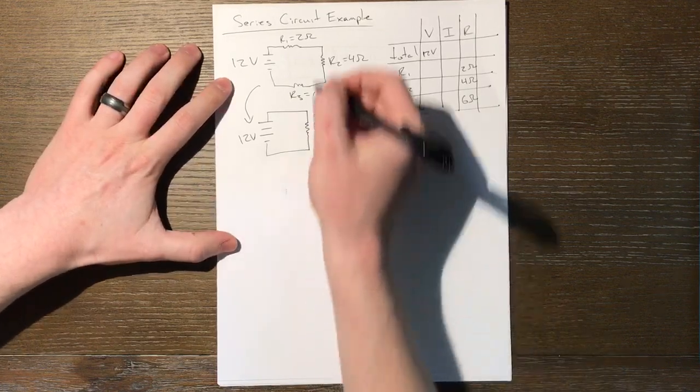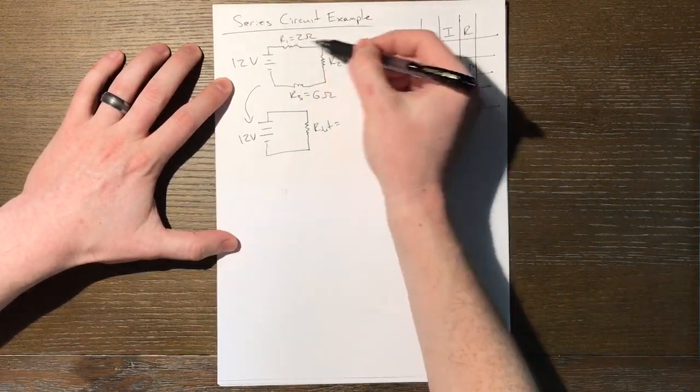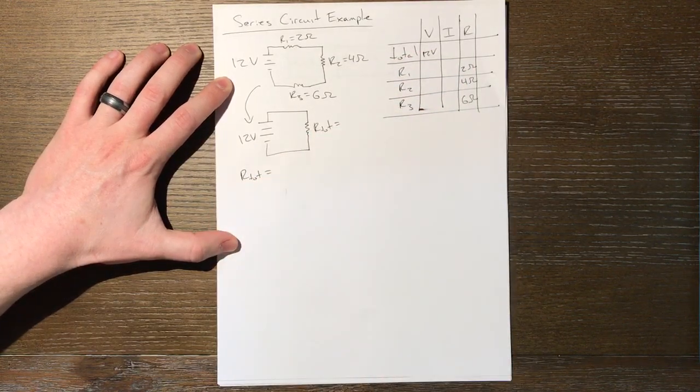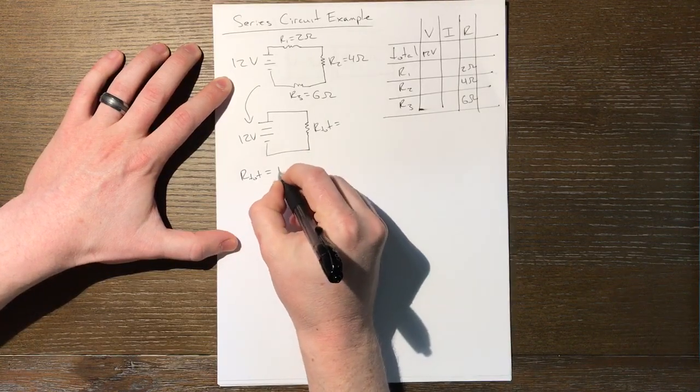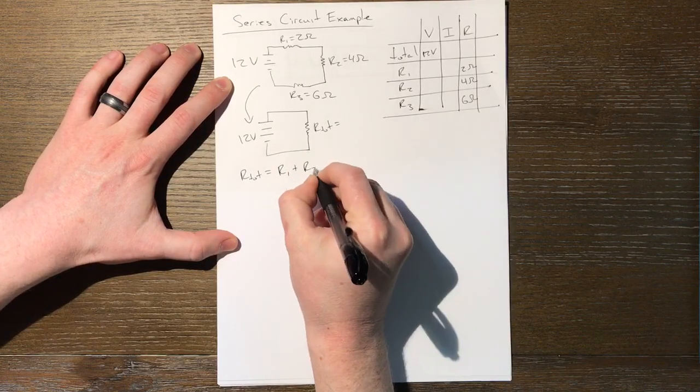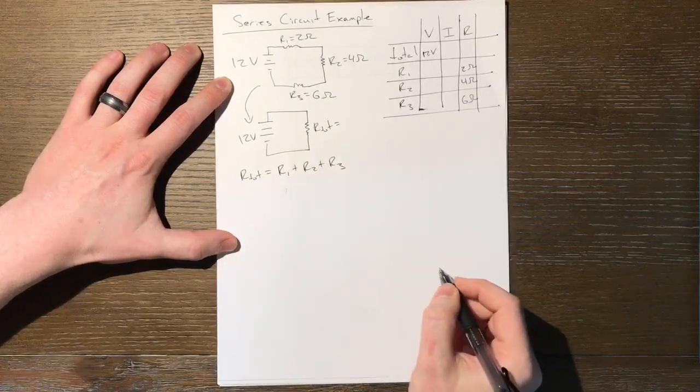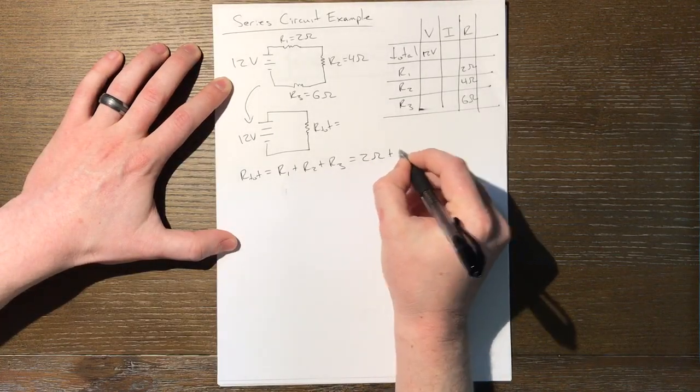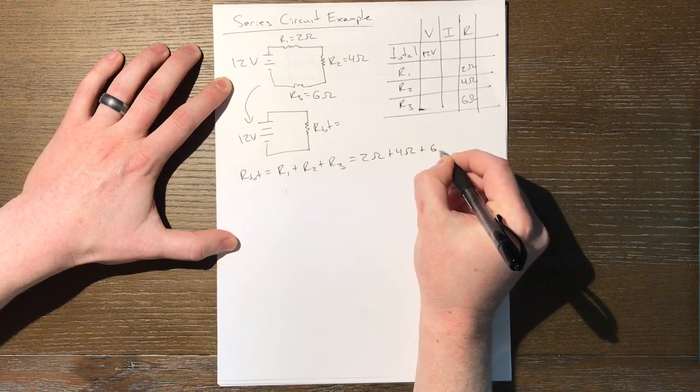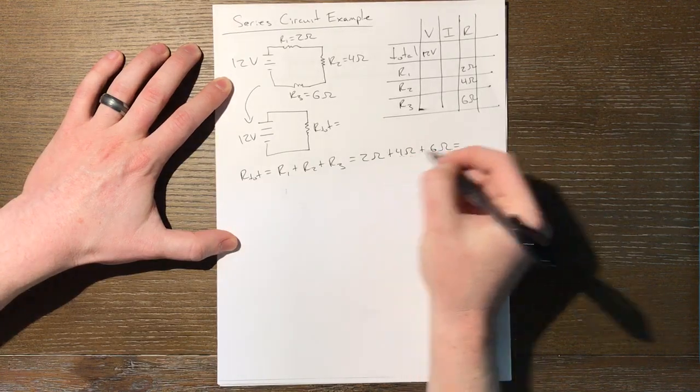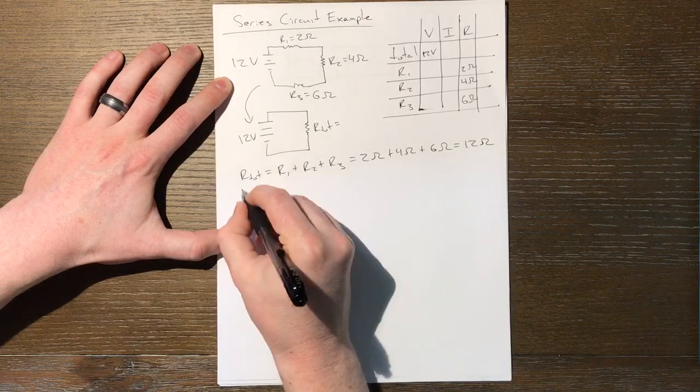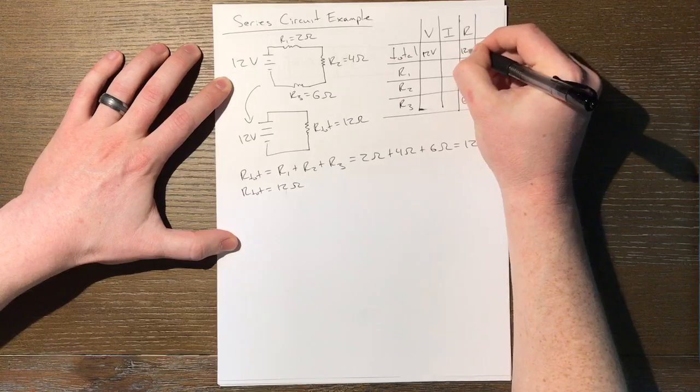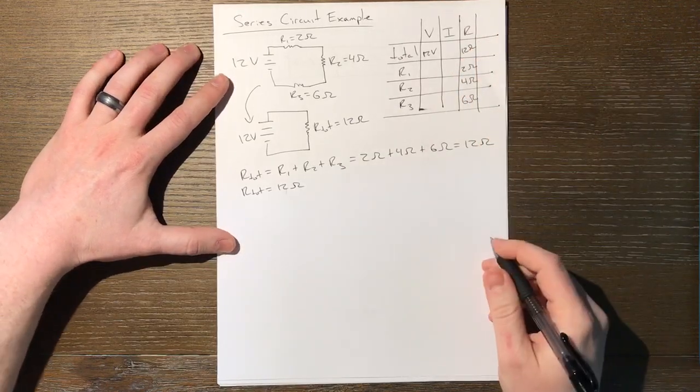So how do we do that? Well, we know this is a series circuit. We talked about why we would recognize it as a series circuit. And the rule for coming up with a total resistance for a series circuit is to take the direct sum. Just add up all of those individual resistances. Well, R1 plus R2 plus R3 would be 2 ohms plus 4 ohms plus 6 ohms. 2 plus 4 is 6 plus another 6 is 12 ohms. We can see the total resistance is 12 ohms. And we can add that to our data table. We now know the total resistance.